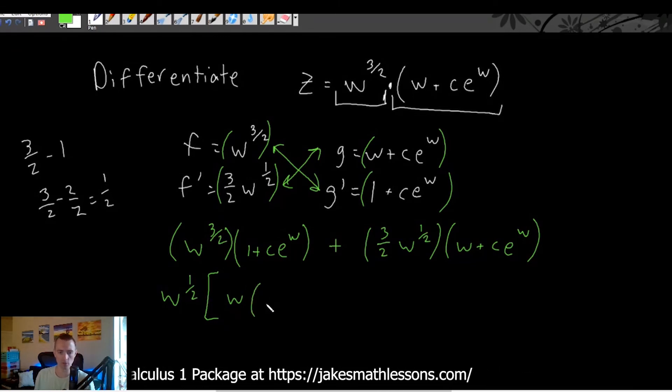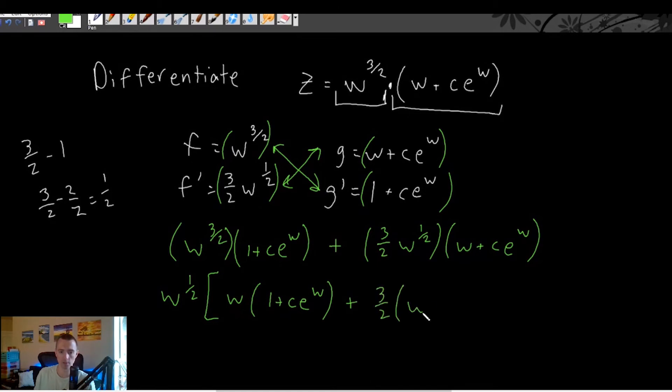So we would have w times one plus c, that was sloppy c, times e to the w. And then plus, if we pull a w to the one half out of here, we just have three halves times w plus c to the w.